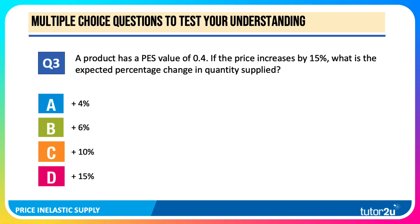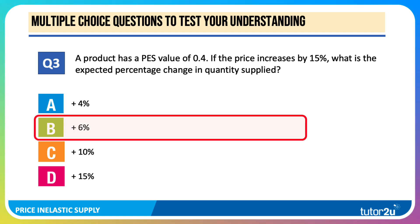Question three: a product has a price elasticity coefficient of 0.4. If price increases by 15%, what is the expected percentage change in quantities supplied? This is a low value of price elasticity — 0.4. The answer is 6%, because 0.4 multiplied by 15% equals 6%.